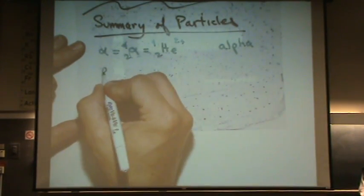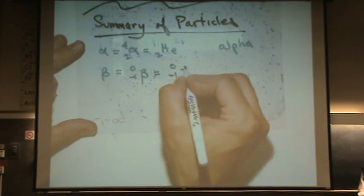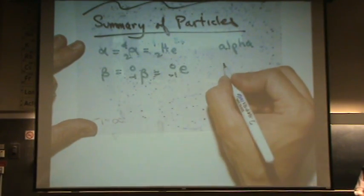You've seen the beta, which is 0 minus 1, or it can be written 0 minus 1 as an electron. Different ways that you can write it. So this is beta.